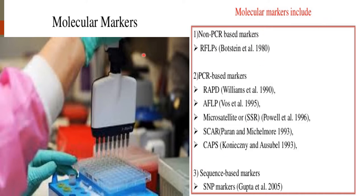Molecular markers include non-PCR based markers, PCR based markers, and sequence-based markers. Under non-PCR based markers, Restriction Fragment Length Polymorphism is the example. Examples for PCR based markers are RAPD, AFLP, microsatellite, SCAR, and CAPS. In case of sequence-based markers, an example is SNP, that is Single Nucleotide Polymorphism.